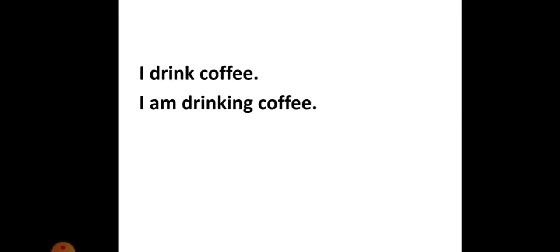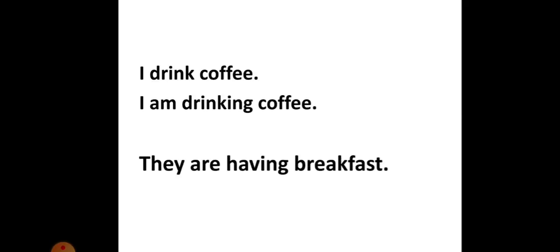Now observe these sentences: 'I drink coffee' versus 'I am drinking coffee.' The first statement speaks about my habit of drinking coffee. But the second one is not about my habit or hobby — it's about what is happening exactly at the time of speaking. Here are a few more examples: 'They are having breakfast.' 'It's raining outside.' When I say they are having breakfast, they are having it now. When I say it's raining outside, it's raining now at this moment.